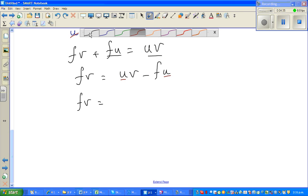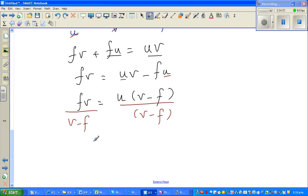So if you factor out u, you'll have u(v - f). Now divide both sides by v - f, so fv/(v - f) = u.